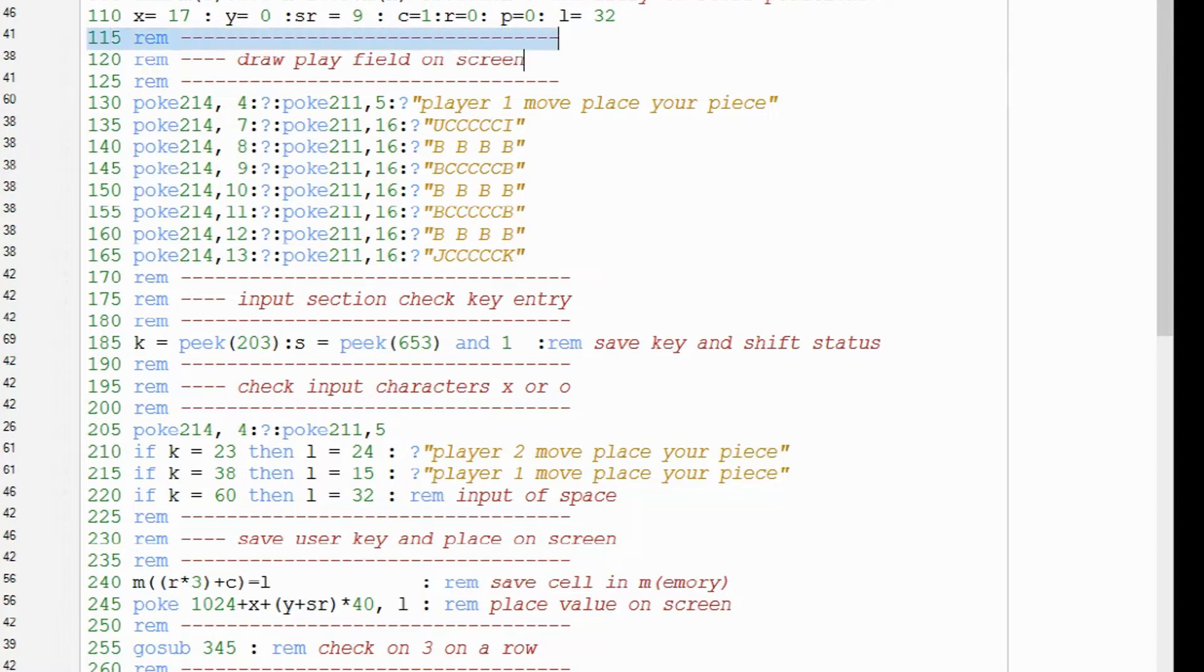First, look at the code to place the player field on the screen. The poke 214 and poke 211 combination is used to set the X and Y position for the next print command.